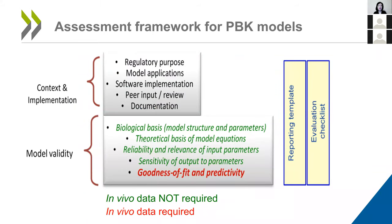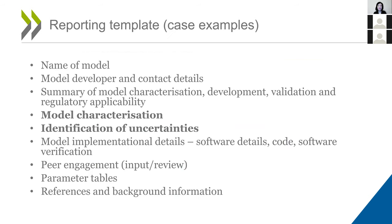In chapter three, we have the assessment framework, which will be covered in more detail in the next presentation. The reporting template recommends starting with an executive summary that clearly articulates the model purpose, discusses details of the model, and highlights the key uncertainties. This is followed by model implementations, peer review records, parameter tables, references, and background information. You will see in the two case examples how the modelers use this template to report their analysis.